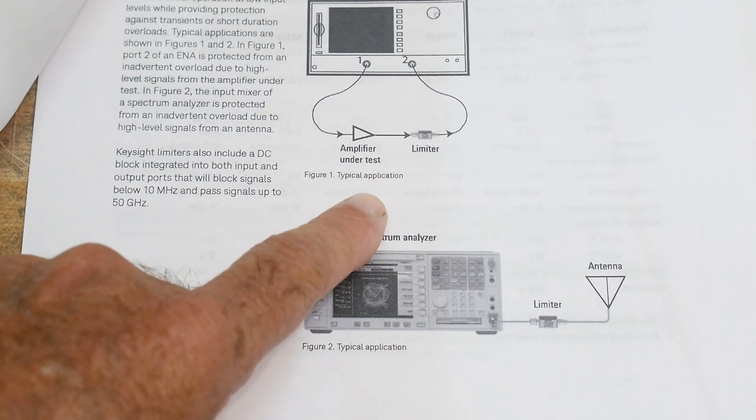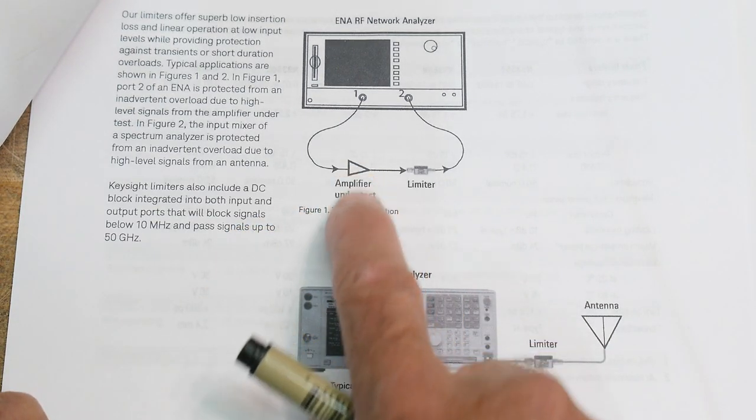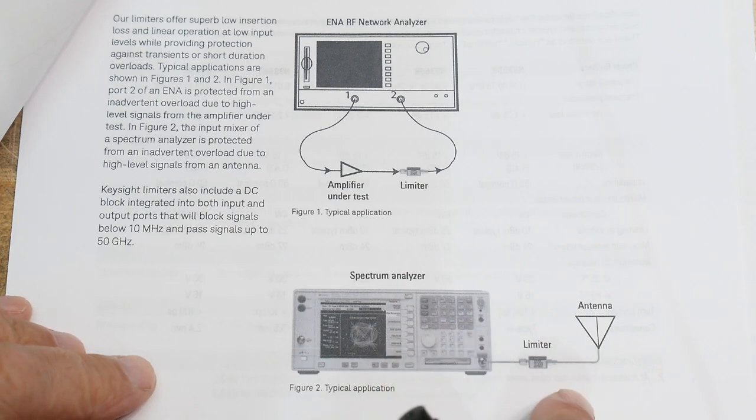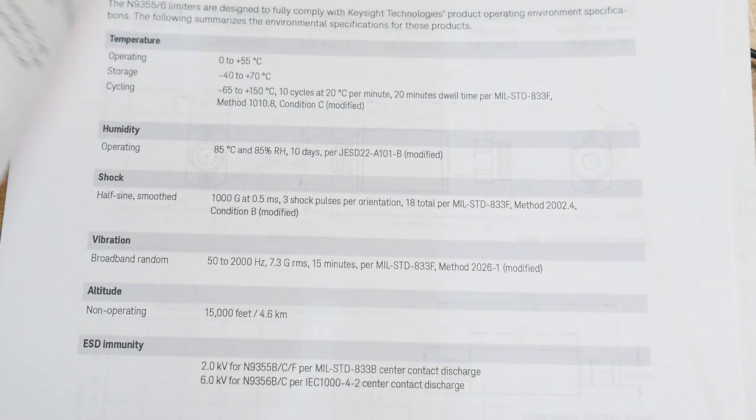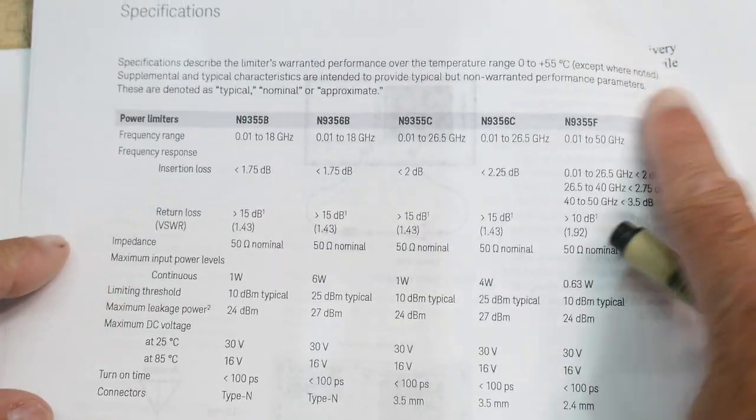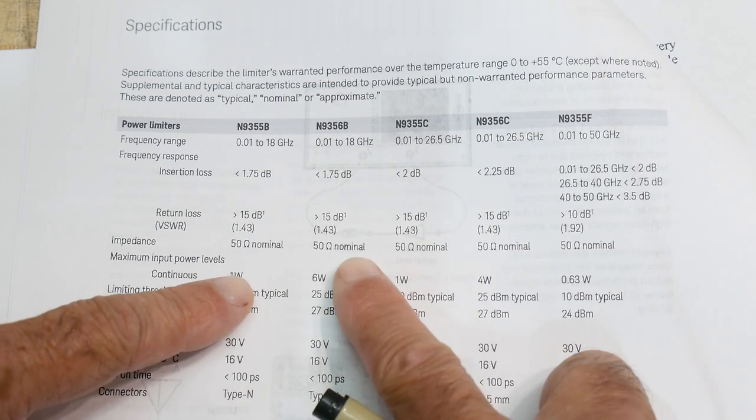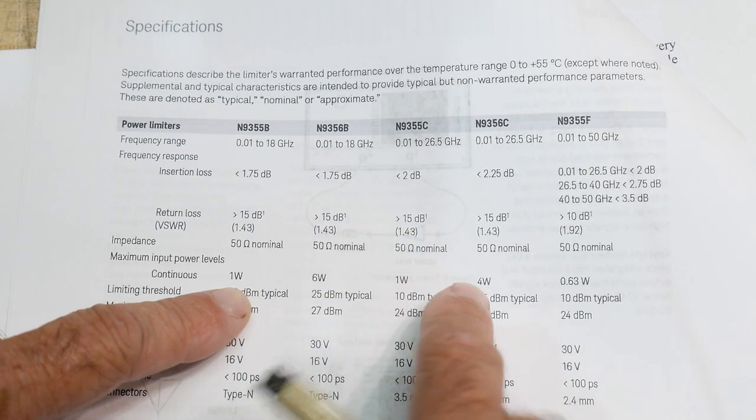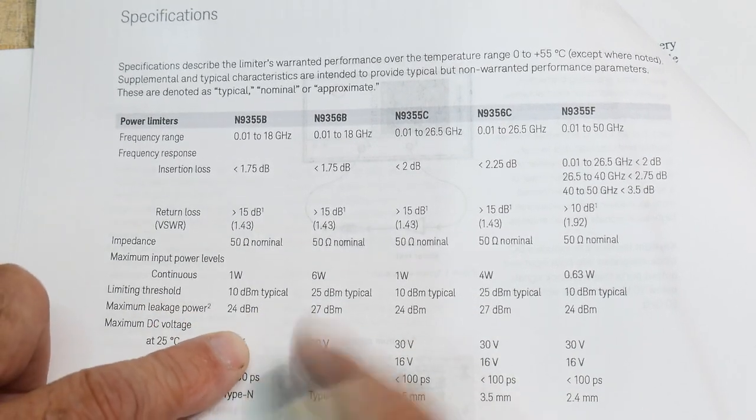Applications - here you're testing an amplifier, you put a limiter in there just in case the amplifier goes crazy on you. Spectrum analyzer and antenna - they're even worried about too much signal coming in from an antenna, that's unusual. Let's look at some specifications here - insertion loss about 2 dB, return loss about 15 dB, impedance, different wattages - here's a 1 watt, 6 watt, 1 watt, 4 watt. Ours is a 10 watt. Maximum leakage - this is the total amount that could come out at the rated power. If you're putting in 6 watts, you might have 27 dBm coming out, which is almost a watt.